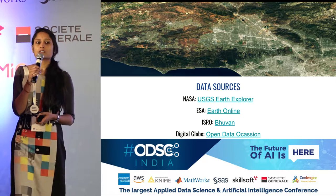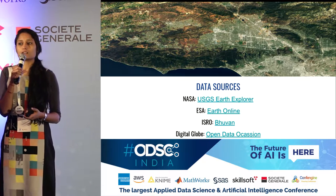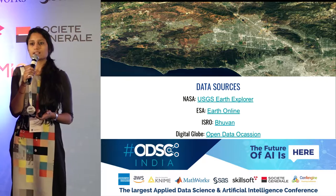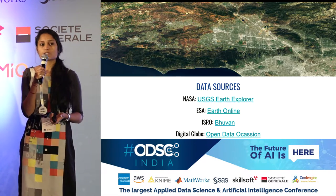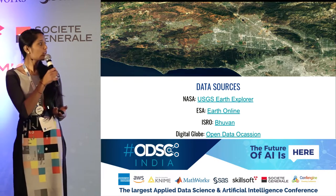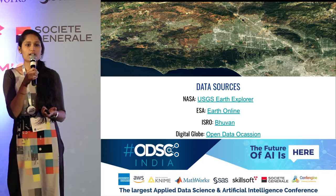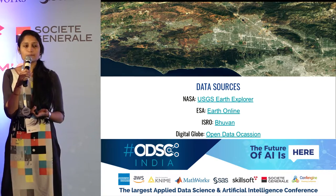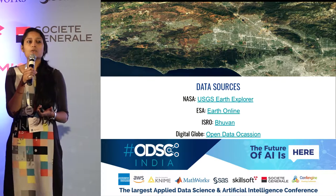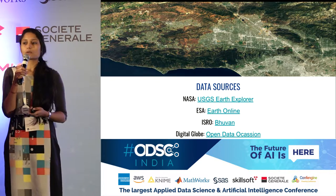There are various data sources available. Different countries are working through their own ways, launching satellites and publishing open data through various channels. NASA has USGS Earth Explorer where they have their Landsat 8 satellite data — the latest version that is launched. They've also recently incorporated data from other satellites around the world. Then there is the European Space Agency, which has Earth Online where they publish Sentinel data. Then we have ISRO in India, which has a platform called Bhuvan. There are also private players doing a great job — one of them is Digital Globe, which I'll talk about a bit later.